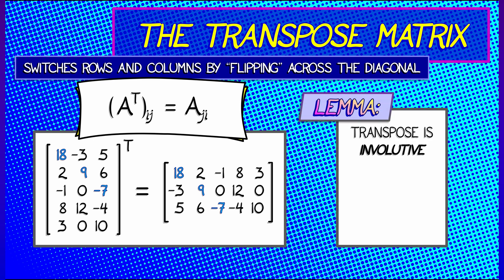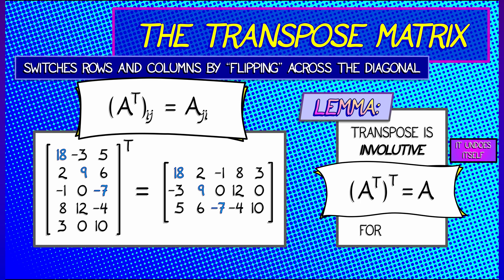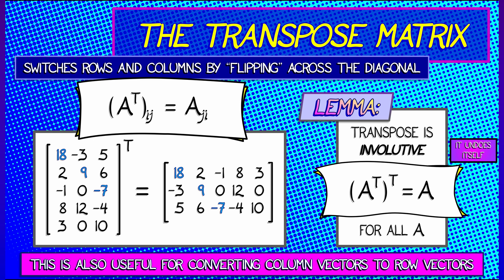Now, a couple of simple properties. First, the transpose is involutive. Man, I like that word. What does that mean? It means it undoes itself. If you take the transpose of a transpose, you get back what you started with. In general, anything that's involutive means you do it twice, you get back what you started with.